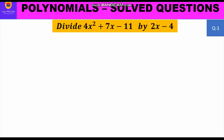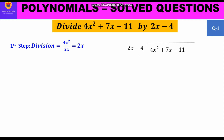Let us start with question one: divide 4x² + 7x − 11 by 2x − 4. We shall write the divisor, that is 2x − 4, outside the bracket, and 4x² + 7x − 11 inside. Now we shall start with the first step, that is division.